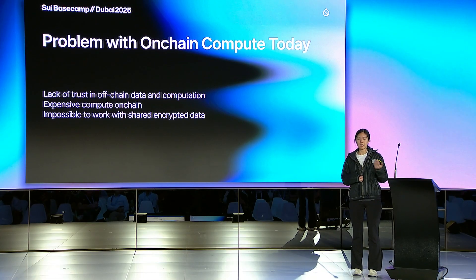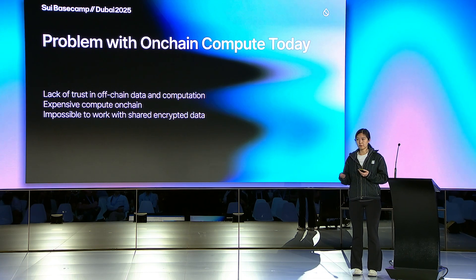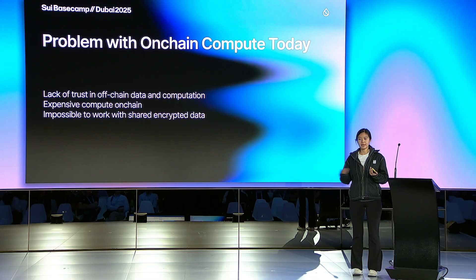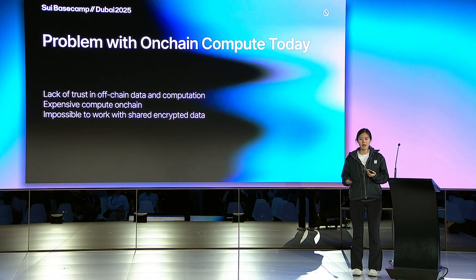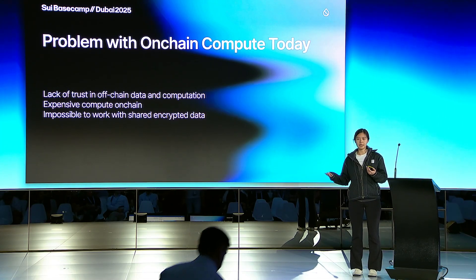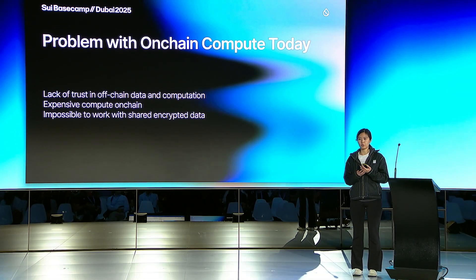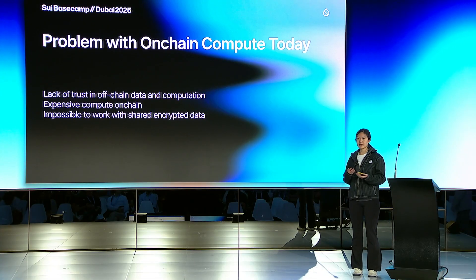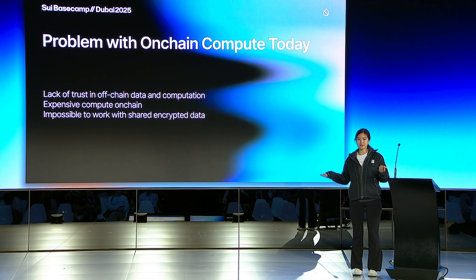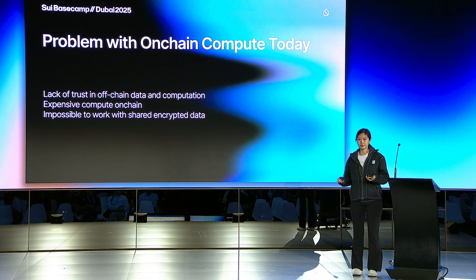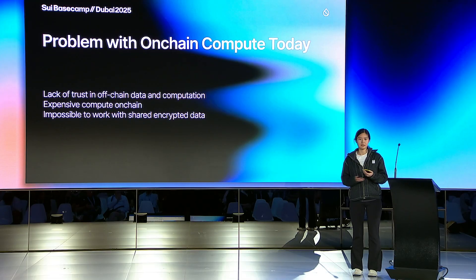First of all, there is a lack of trust in off-chain data and computation in general. For example, if I were to implement a prediction market today and say, by the end of my presentation, Bitcoin will hit $100K — I place my bet on-chain, and at that point I kind of have no choice but to trust that someone in the future settles my bet on-chain using the fair market price of Bitcoin. If they posted the price of Ethereum to settle my bet, I'll be really upset and will have no way of finding out what's the source of truth.